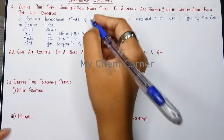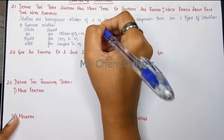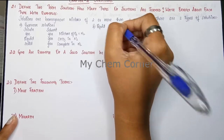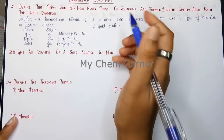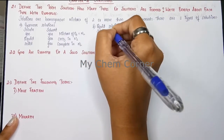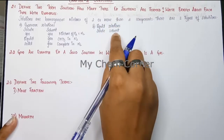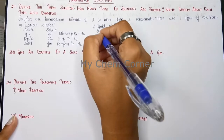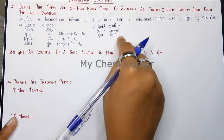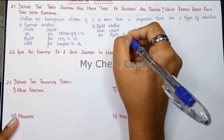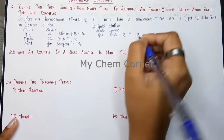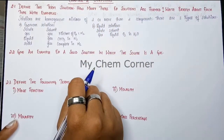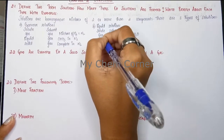The second type is liquid solutions. In liquid solutions, the solvent is maintained as liquid. When the solute is gas and the solvent is liquid, a very simple example is oxygen dissolved in water — oxygen is the gas and water is the liquid solvent.